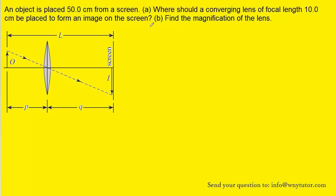For part A it asks us where should a converging lens of a focal length 10 centimeters be placed to form an image on the screen. And we will be measuring that distance from the screen, and so from the picture what we are trying to solve for in part A is going to be Q. Again that will be the distance that the lens is from the screen.